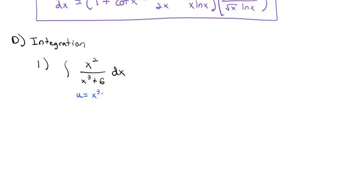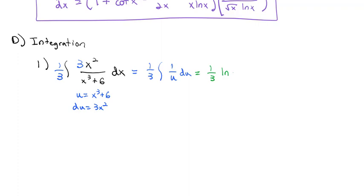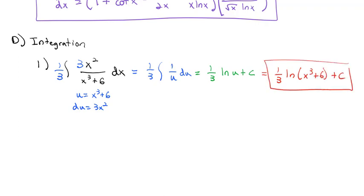Quite often with these, the key is u-substitution. Notice the denominator x³ + 6 has derivative 3x². We multiply by 3 inside and 1/3 outside to get 1/3 times the integral of 1/u du, which equals 1/3 times the natural log of u plus a constant. Substituting back, our final answer is 1/3 times the natural log of x³ + 6 plus a constant.